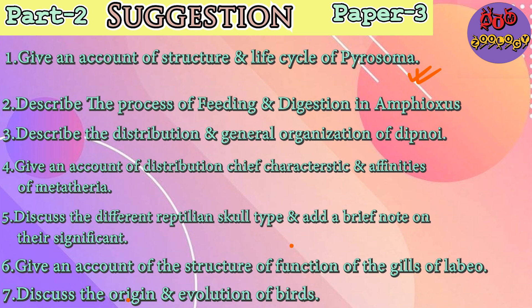Expected question number 2: Describe the process of feeding and rendition of amphioxus. Question number 3: Describe the distribution and general organization of dipnoe. Question number 4: Give an account of distribution, chief characteristics and affinity of metatheria. Question number 5: Discuss the different reptilian skull types and a brief note on their significance. Question number 6: Give an account of the structure and function of the gills of Labeo rohita — those who have studied the gills structure and functioning will find this easy. Question number 7: Discuss the origin and evolution of birds.